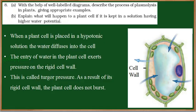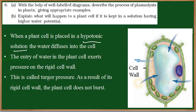Now, what happens if a plant is kept in a high water potential, that is, a hypotonic solution? When we place a plant cell in a hypotonic solution — hypotonic means it consists of less solute and more water — water diffuses into the cell.